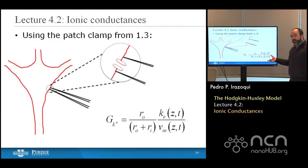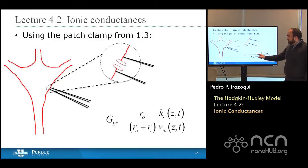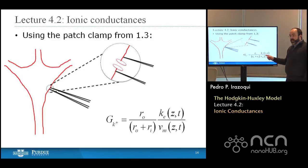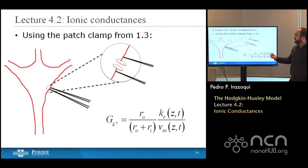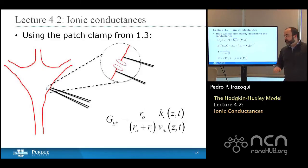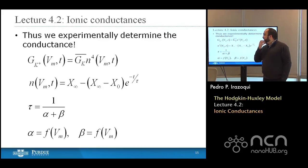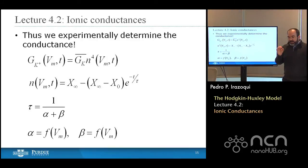We can then use the equation we had before and find the conductivity of potassium equal to the ratio of the resistance outside the cell divided by the sum of resistance per unit length outside and inside the cell, multiplied times the applied current — which we know — divided by the membrane voltage, which we can measure. Having these terms allows us to experimentally determine the conductance. We find, in fact, that there isn't a clean and neat equation, but we can curve fit it.